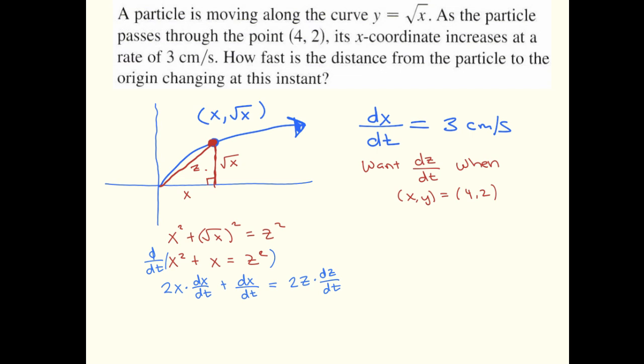Now again, we want dz/dt, so that means everything else we should be able to substitute the values in. Now at this instant the x-coordinate is 4, so we can plug that in for x. We know dx/dt is 3, so we'll plug that in for dx/dt, but that still leaves this z here. So in order to find that, we're going to analyze this triangle at the moment in question.